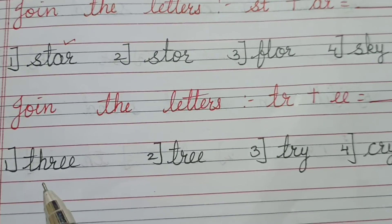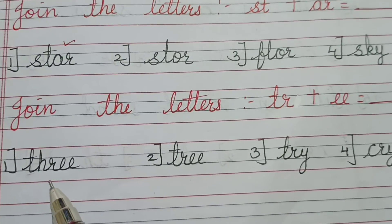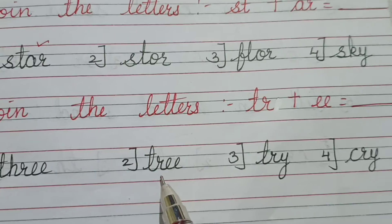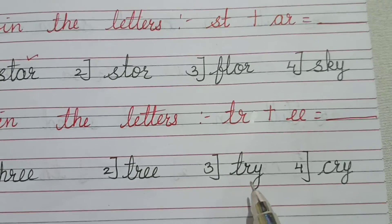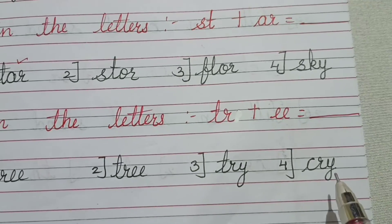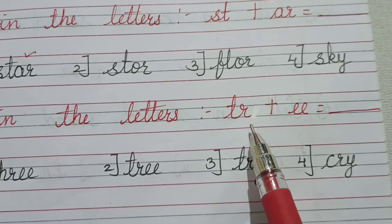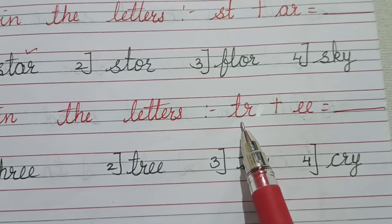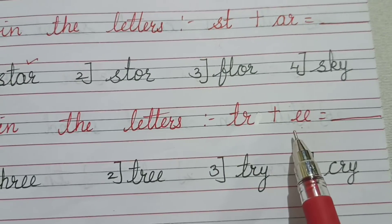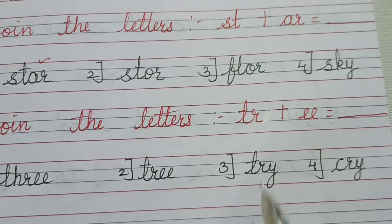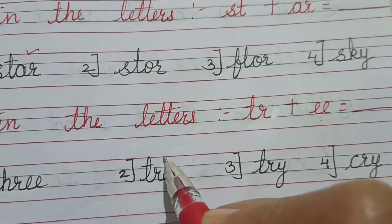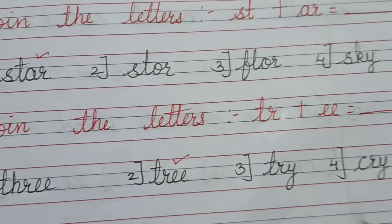Join the letters TR plus EE — it becomes TREE. You can see here the options: THREE, TREE, TRY, CRY. When we join these two letters, TREE is correct. So the correct answer is TREE.